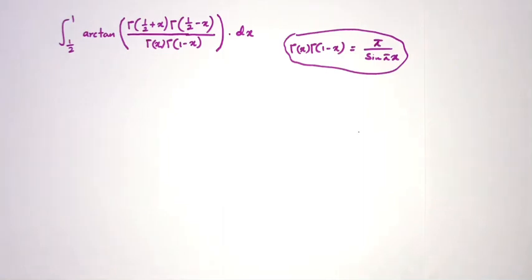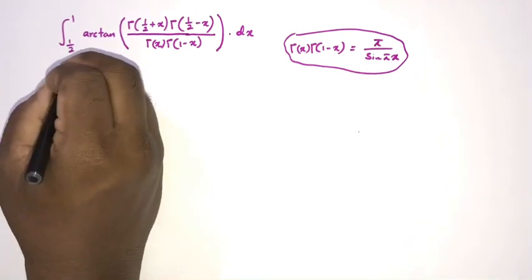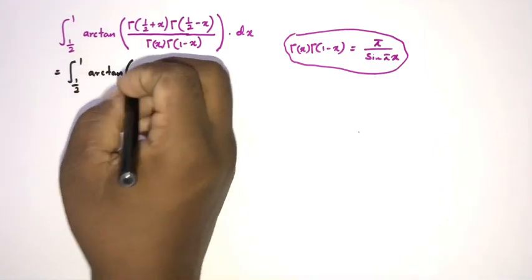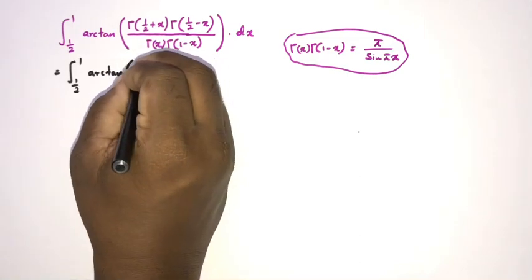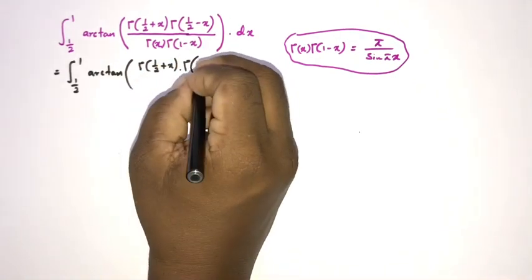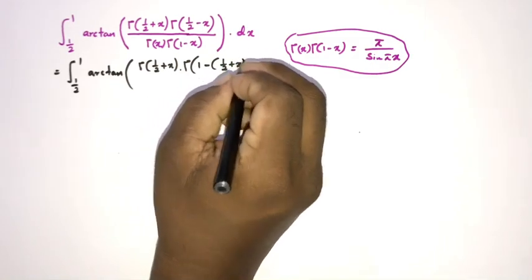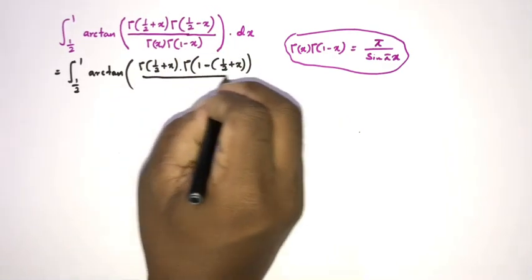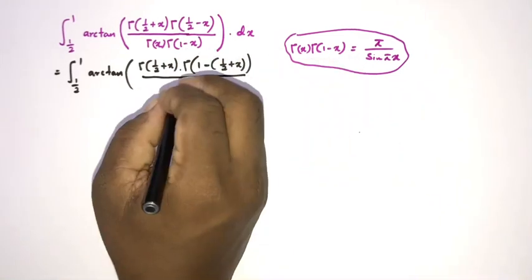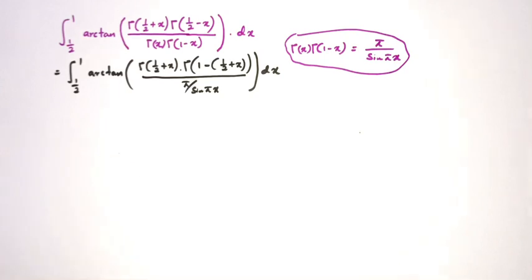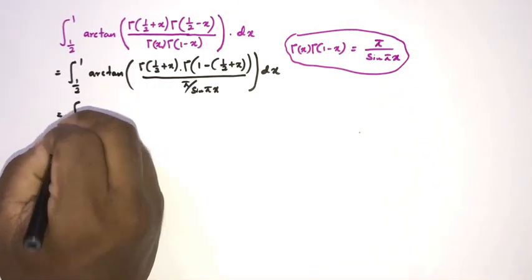In the numerator we have gamma(1/2 + x) · gamma(1/2 - x). We can write gamma(1/2 - x) as gamma(1 - (1/2 + x)), so we can apply Euler's reflection formula again. In the denominator we substitute γ(x)·γ(1−x) = π / sin(πx), giving us dx.